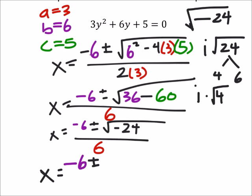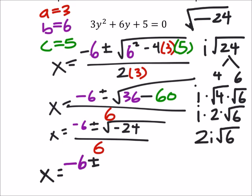So, it's i times the square root of 4 times the square root of 6. So, i times the square root of 4 is 2 times the square root of 6. So, you could say it's 2i square root of 6. And that's what we would put down here is 2i times the square root of 6.